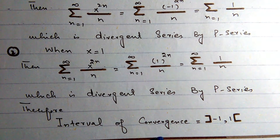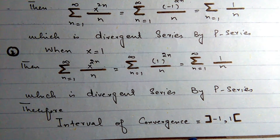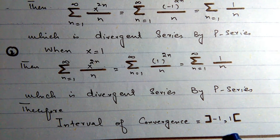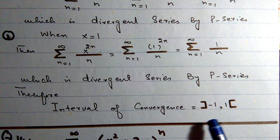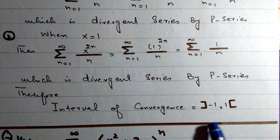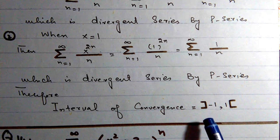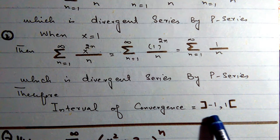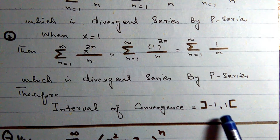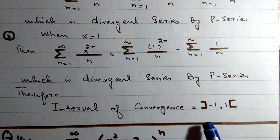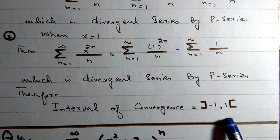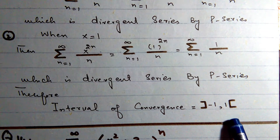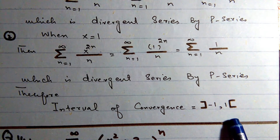Since both endpoints are divergent, the interval of convergence is the open interval (-1, 1).